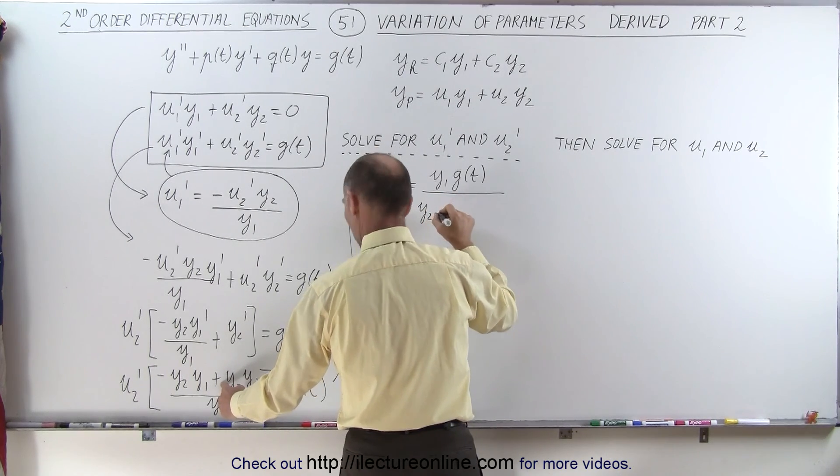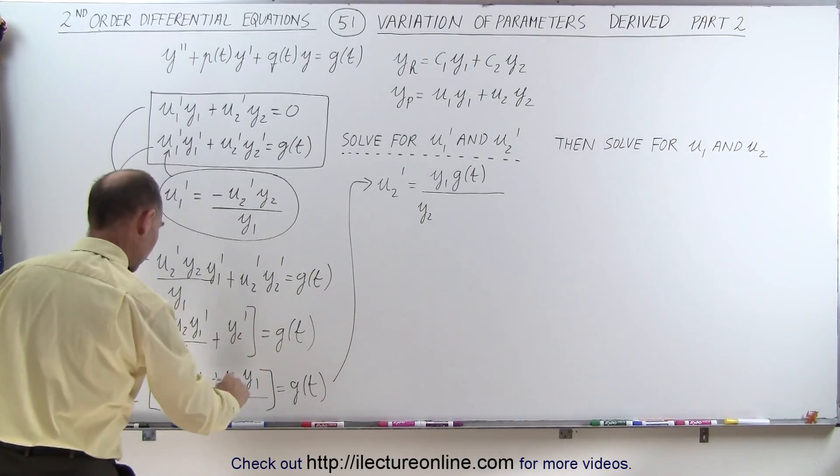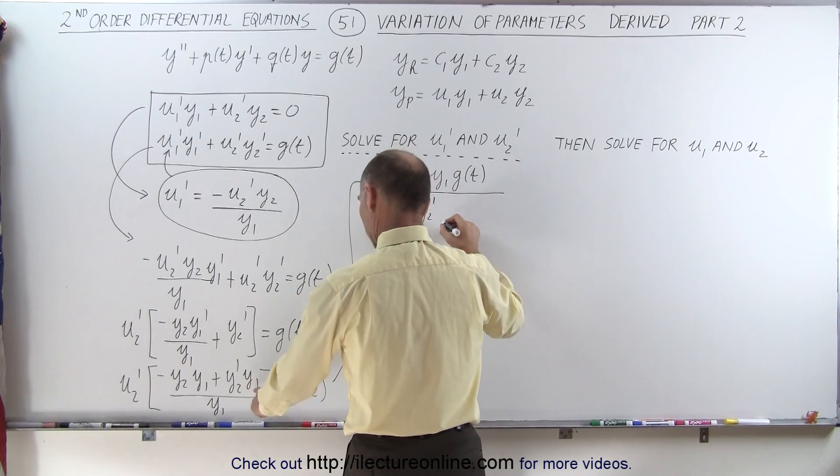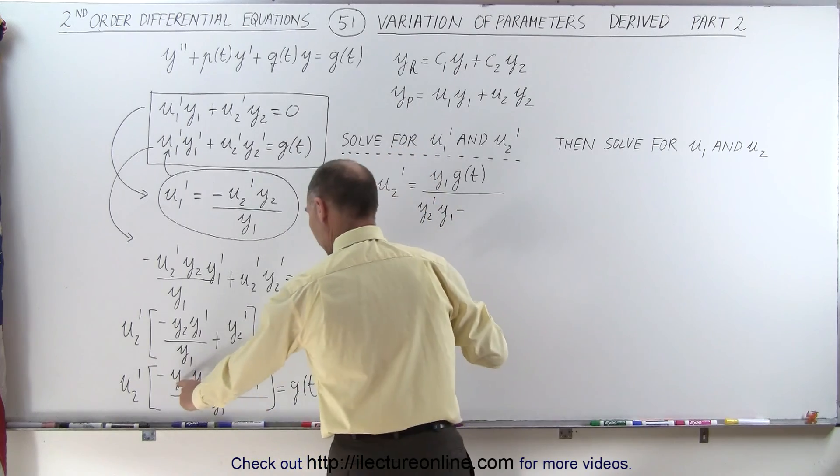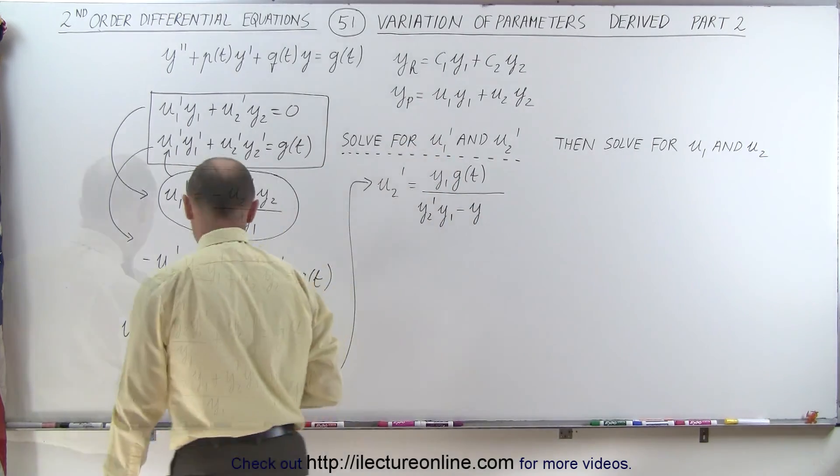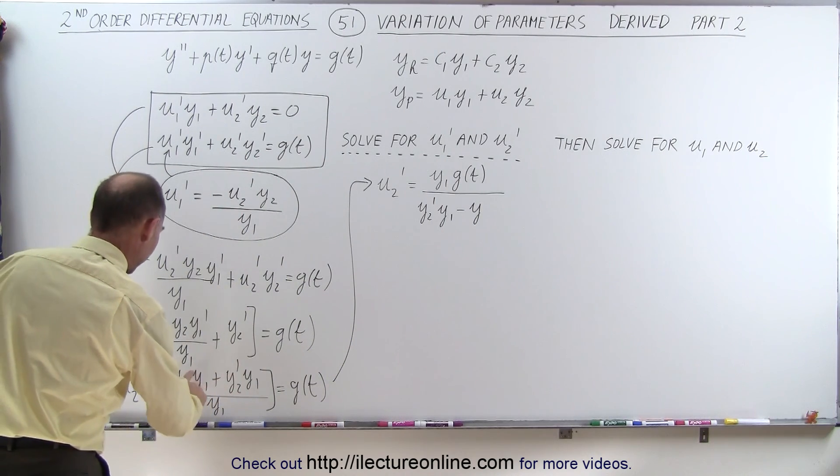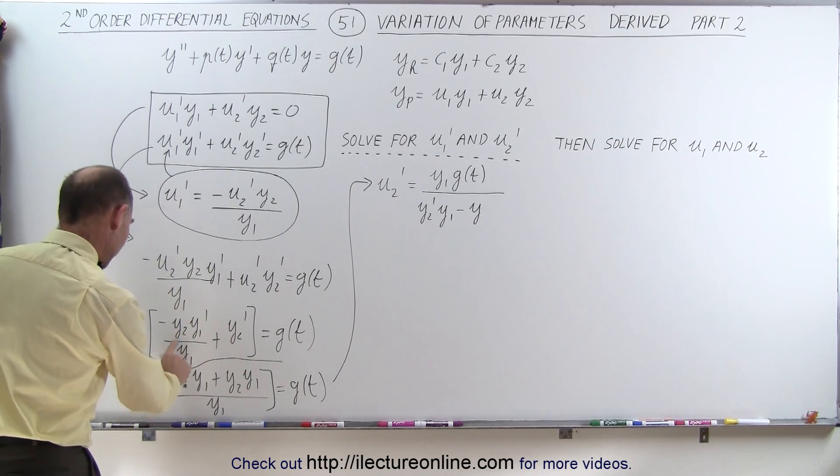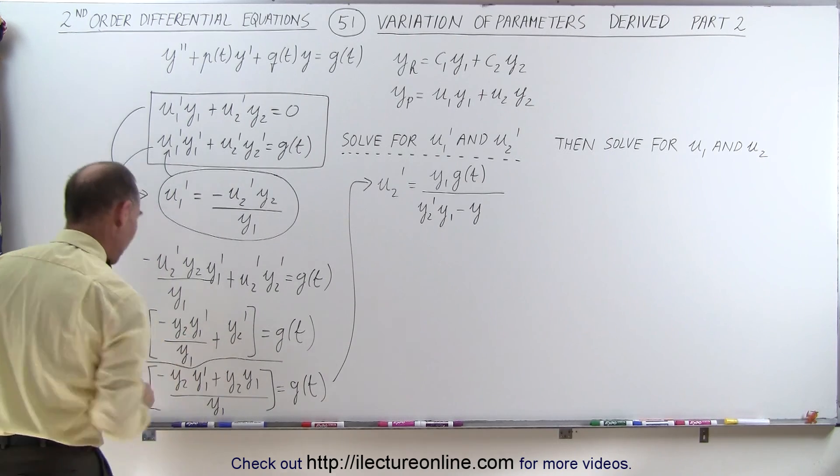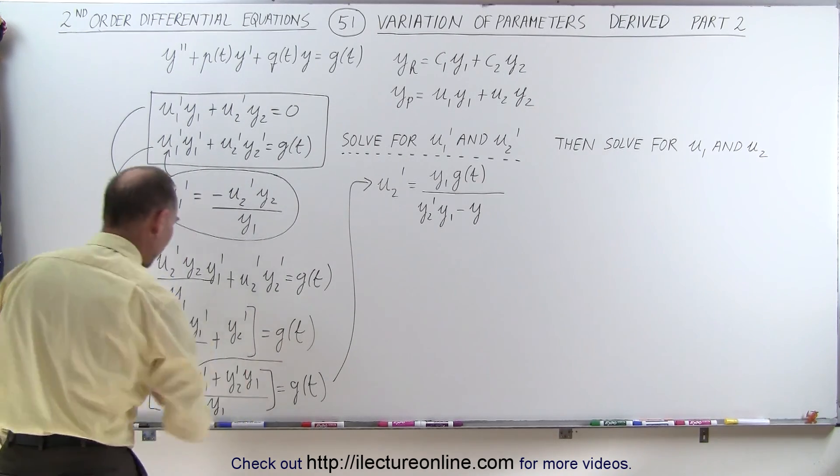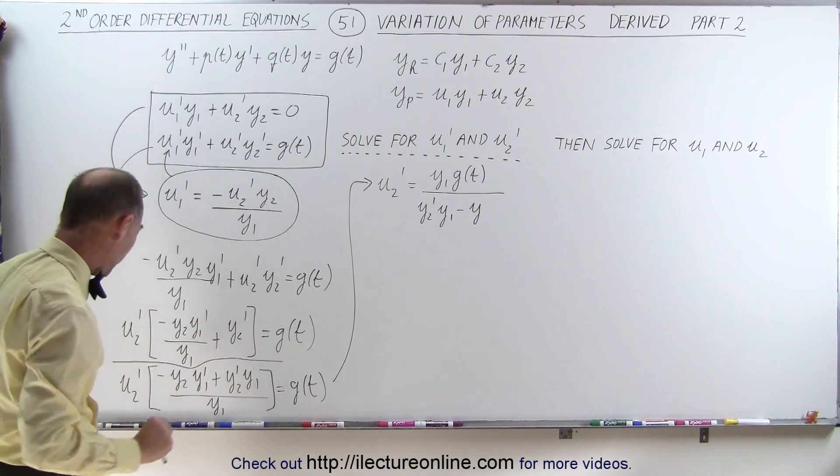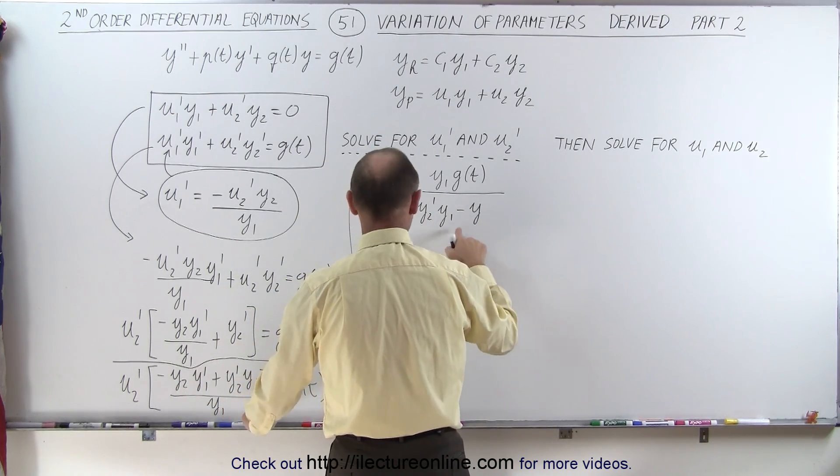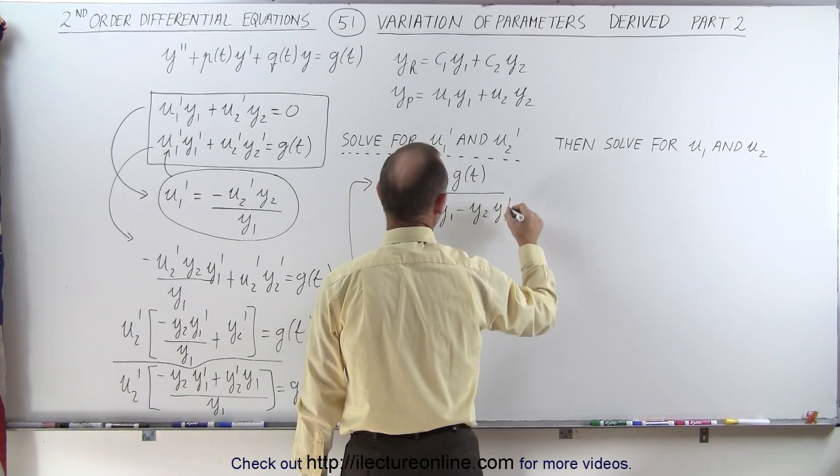So here we have y2' times... I'm missing something here. y2', I'm missing a prime there. Can't do that. So we have a y2' times y1 minus y2... Oh, I'm forgetting all my primes here. I've got to be careful because I'm running out of board space and it looks a little funny here. So let me see here what I'm missing. So here I have a y2' and a y1', and I have my prime over here, and here I have a y2' and a y1'. So I've got to be careful not to lose my primes because I don't have a lot of space here and it looks a little funny. So we have y2' y1 minus y2 y1'. That's better.